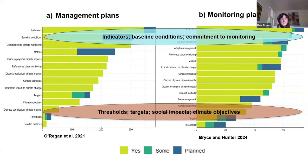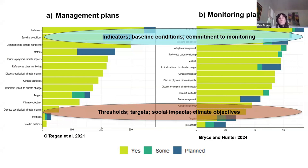We found consistent patterns in both the highest and lowest scoring elements of the index. The three highest scoring elements were indicators, a discussion of baseline conditions, and a commitment to monitoring. It was good news that in both types of plan, there was a strong commitment to monitoring for climate change, and indicators were being included or planned to be included. The lowest scoring components were thresholds, targets, a discussion of sociological climate impacts, and climate change objectives. The lowest scores in these areas reveal some interesting opportunities moving forward.